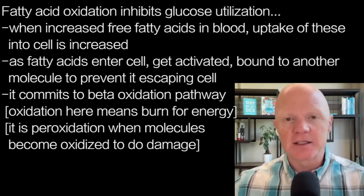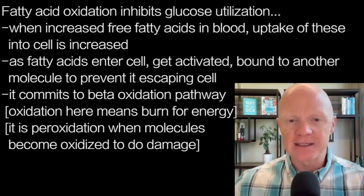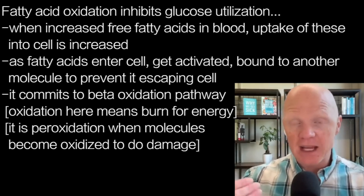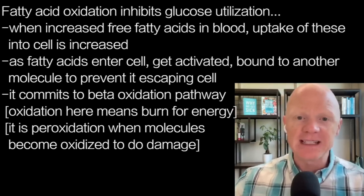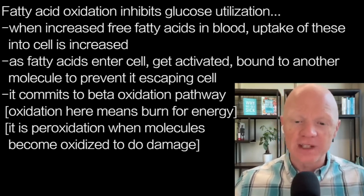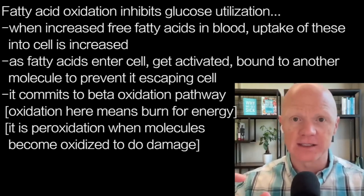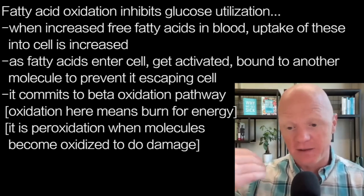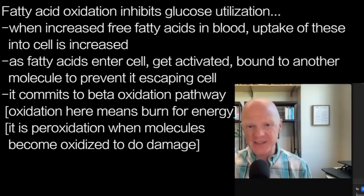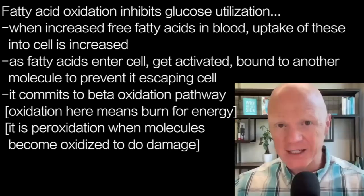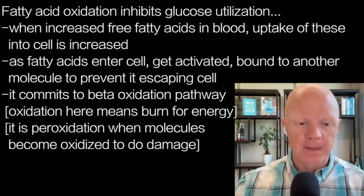Fatty acid oxidation inhibits glucose utilization. When there is an increased number of free fatty acids in the bloodstream, their uptake into the cell will increase. As the fatty acids come into the cell, they get activated and bound to another molecule that locks them in the cell — because the fat could readily go back out. Once locked in, it commits to the pathway called beta oxidation.